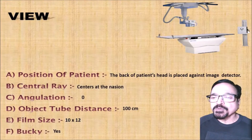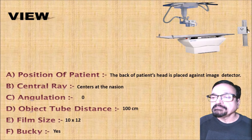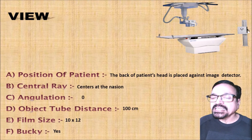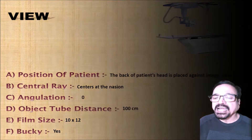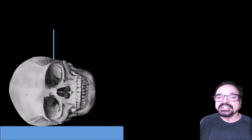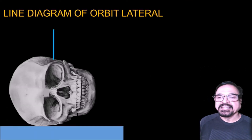Now, what is the position of the patient? The back of the patient's head is placed against the image detector. The center is at the nasion. Angulation is 0 degrees, distance 100 cm, size 10 by 12, and a bucky is needed. This is how you take it, diagrammatically.